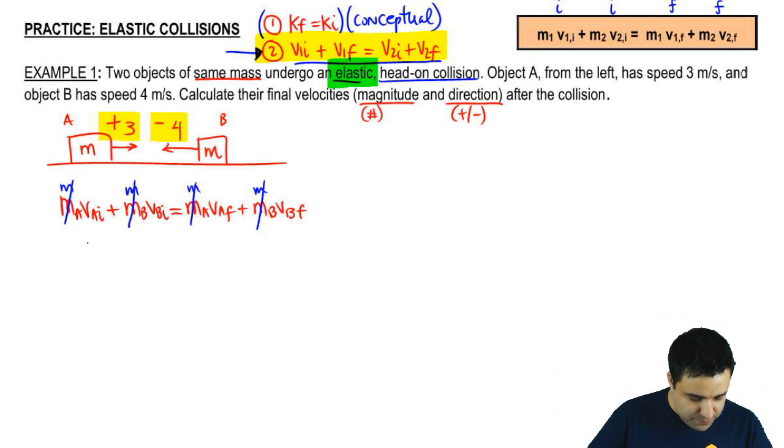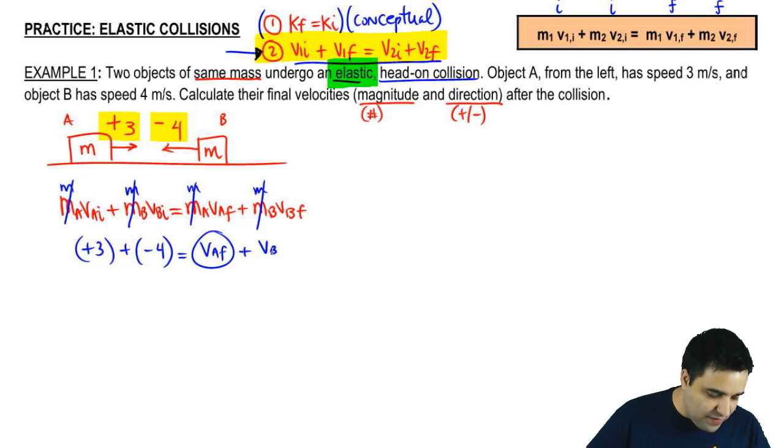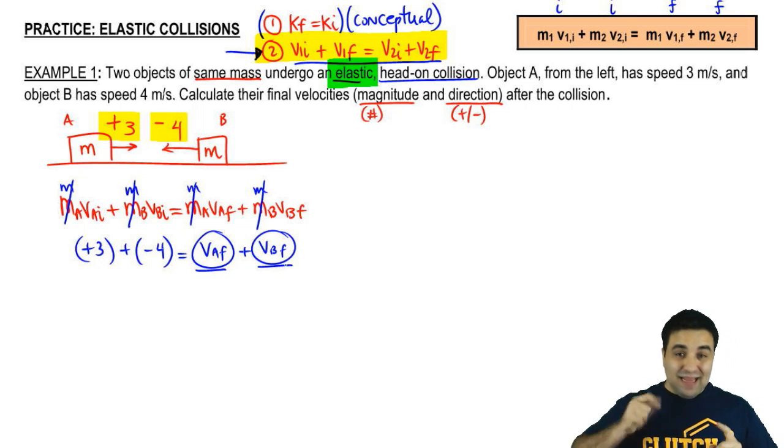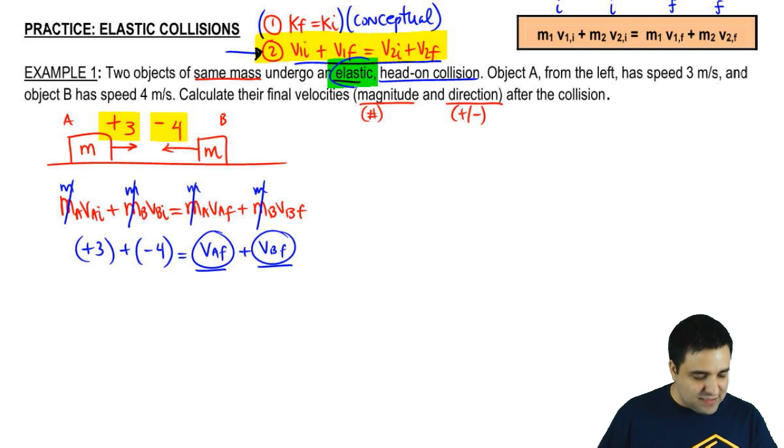VA initial is right there, plus three. VB initial is minus four. VA final, I don't have, and we're looking for it. And VB final, I don't have, and we're looking for it. So, one reaction here could be, well, they just didn't give me enough information, but they did.